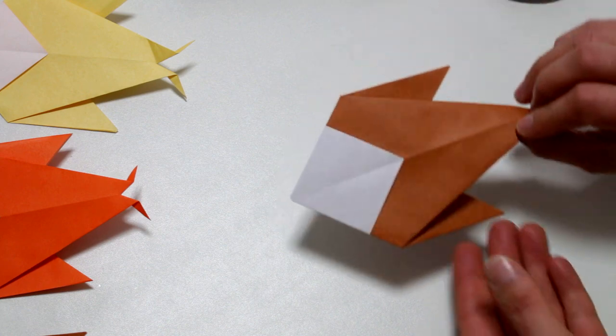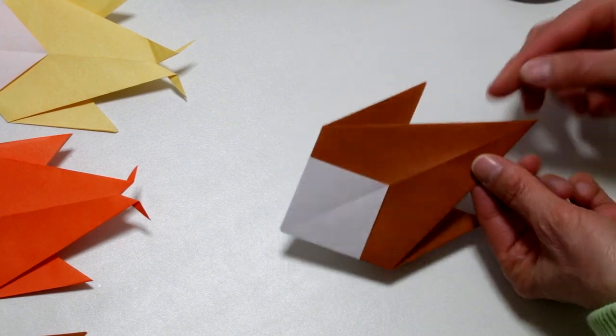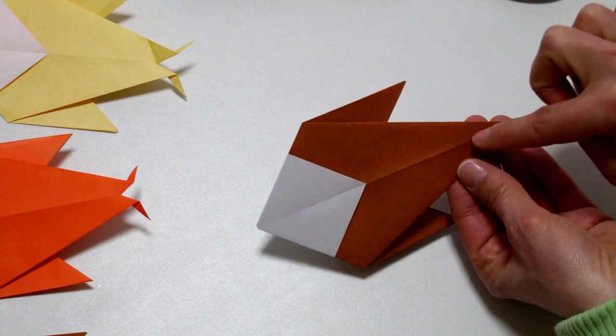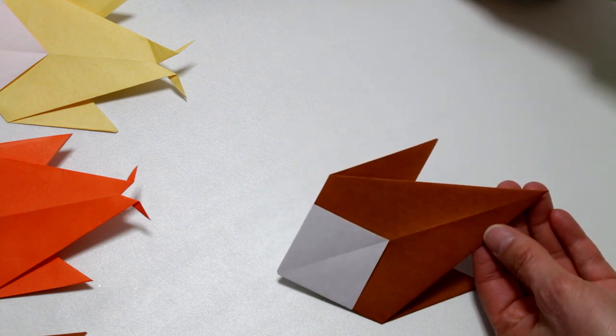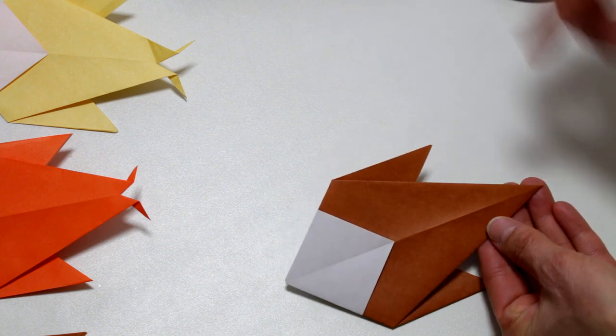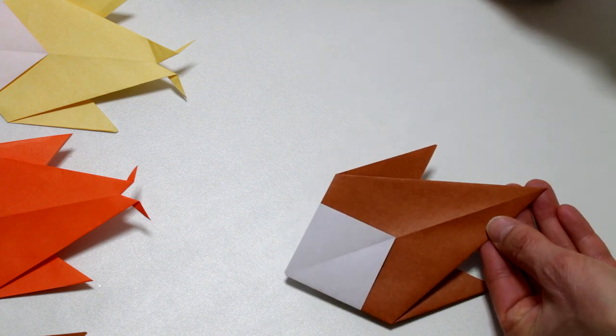Okay, now we're going to turn the model over and it's almost done. The last thing we need to do is the tail. So for this we're going to cut about two centimeters.